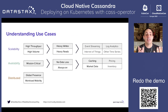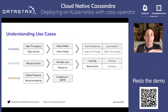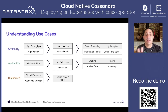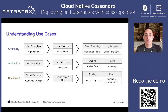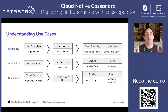Cassandra is distributed. You can install some nodes on dedicated countries or dedicated regions and comply with GDPR laws, or cope with latency constraints from your applications. Use cases here include banking, retail, and all global companies that want to benefit from the distributed capability.